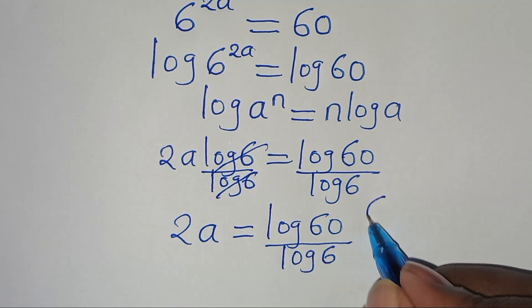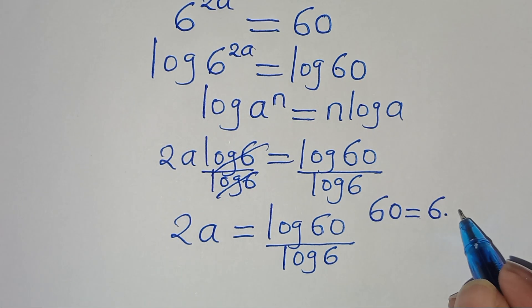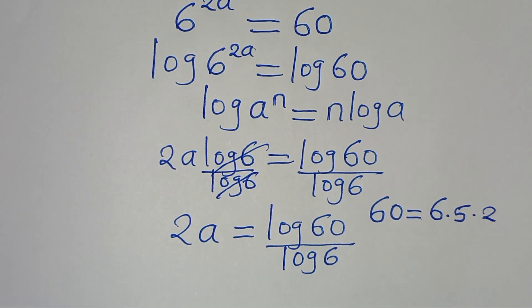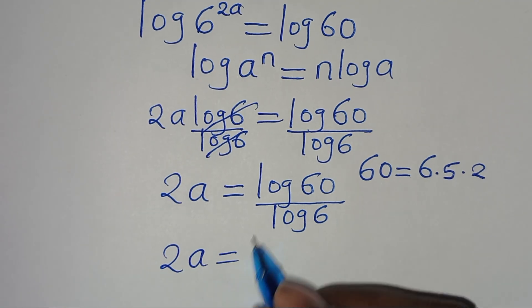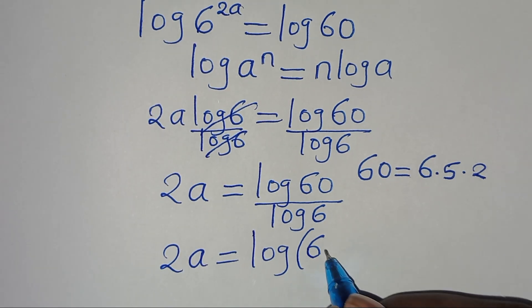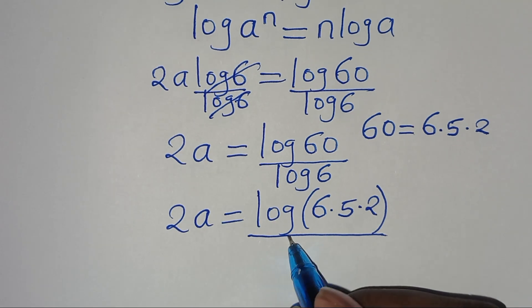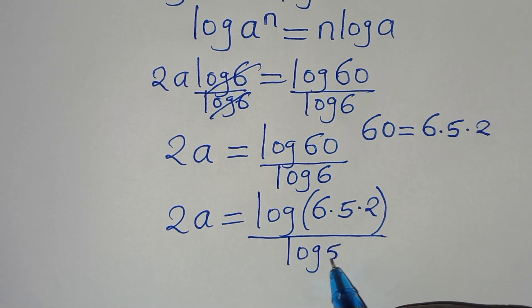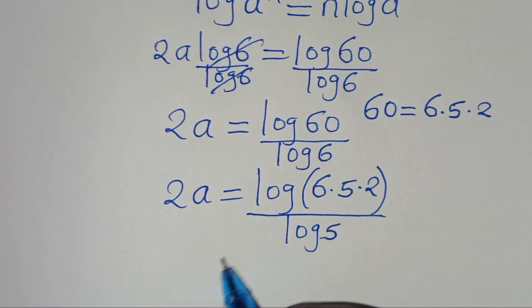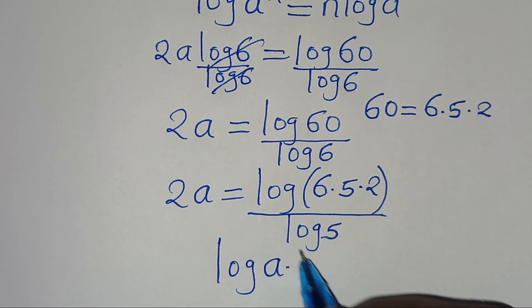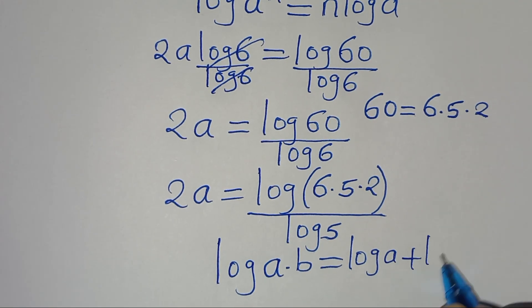The next step is that we can express 60 as 6 multiplied by 5 multiplied by 2. So this implies that 2a is equal to log of (6 × 5 × 2), everything divided by log 6. Now, log of (6 × 5 × 2) is in the form of log(a × b), which we can express as log a plus log b.